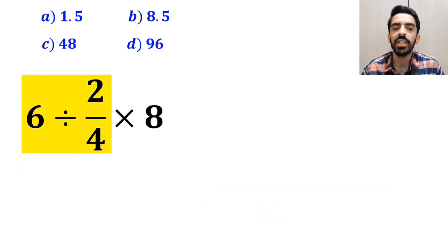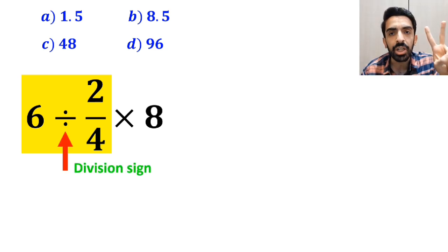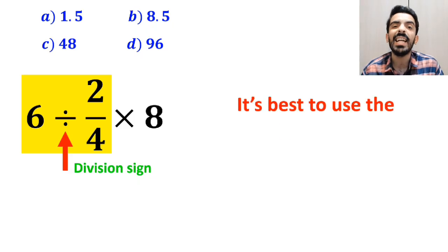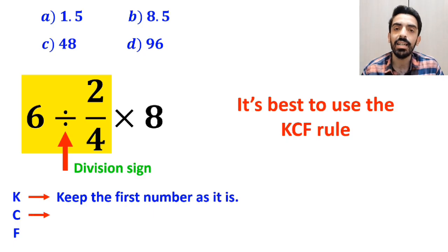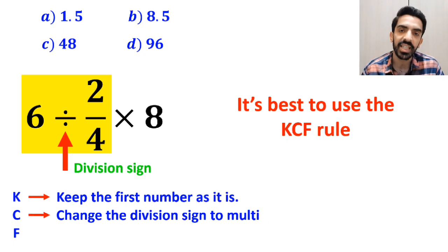So, first we perform the division between 6 and 2 over 4. Whenever we see a division sign between two terms, it's best to use the KCF rule. In this rule, K stands for keep the first number as it is, C stands for change the division sign to multiplication,